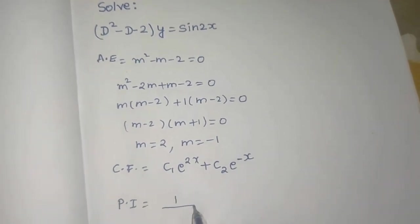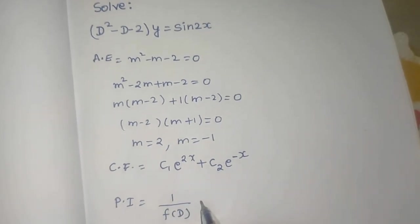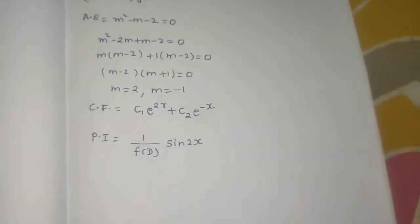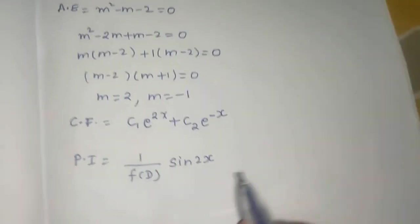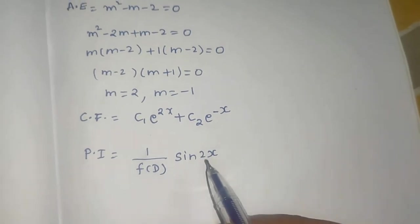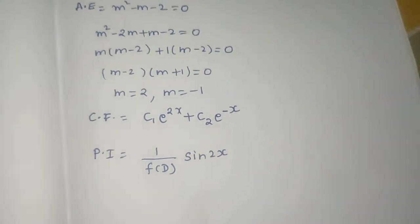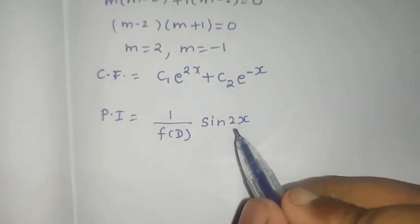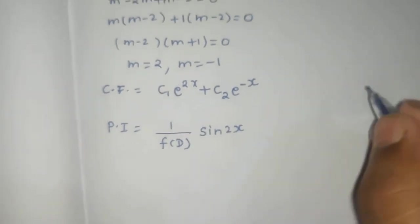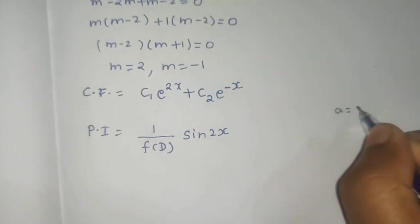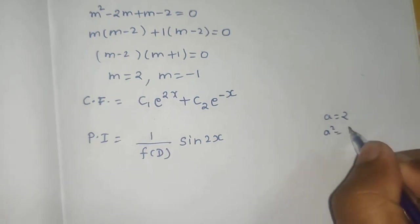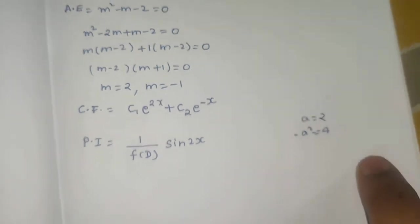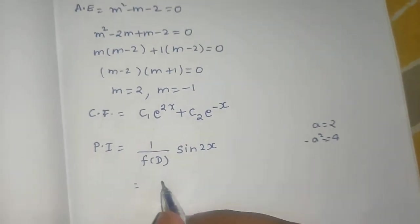Now solving for the particular integral. The particular integral is 1/f(D) operating on sin(2x). For sin(ax) or cos(ax), we take whatever is with x — here a = 2 — so a² = 4, and we replace D² with -a², which is -4.